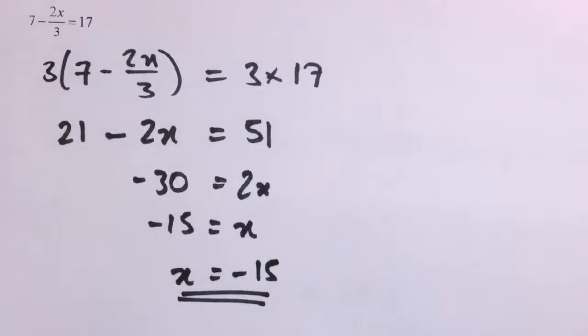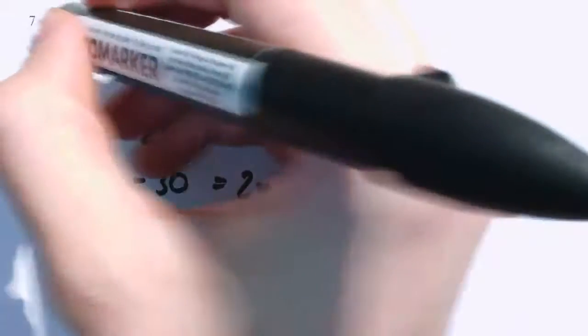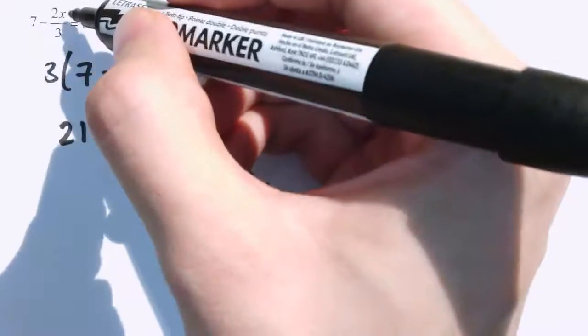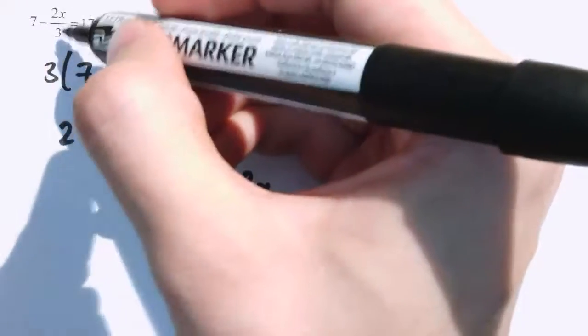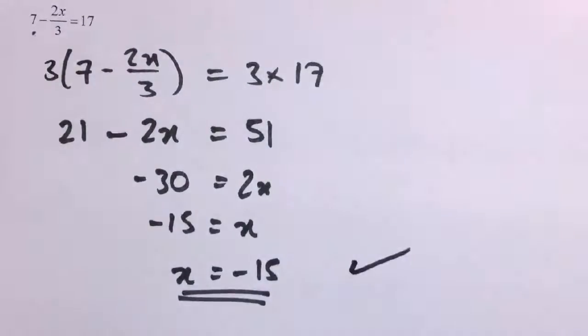As with all equations we could plug the answer into the original equation to check. So we get 7 minus 2 times minus 15 over 3. That's 2 times minus 15 equals minus 30, divided by 3 is minus 10, and we've got minus that. So it's 7 plus 10 equals 17. And that works.